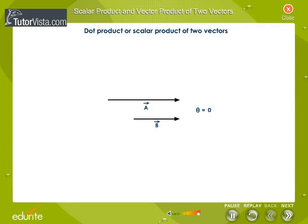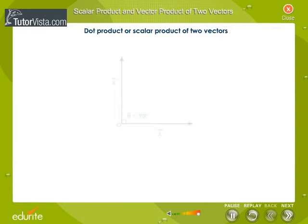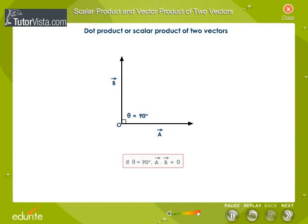If vectors a and b have the same direction, theta is equal to 0, then the scalar product will be equal to the product of the magnitudes of the vectors, as cos 0 is equal to 1. When the vectors are perpendicular to each other, the scalar product is equal to 0, because cos 90 is equal to 0.